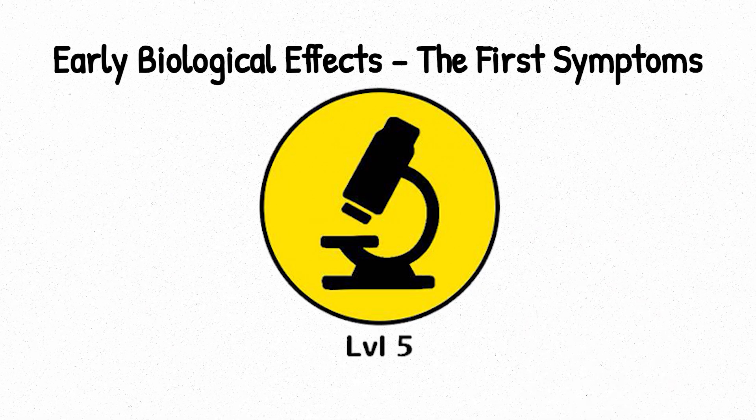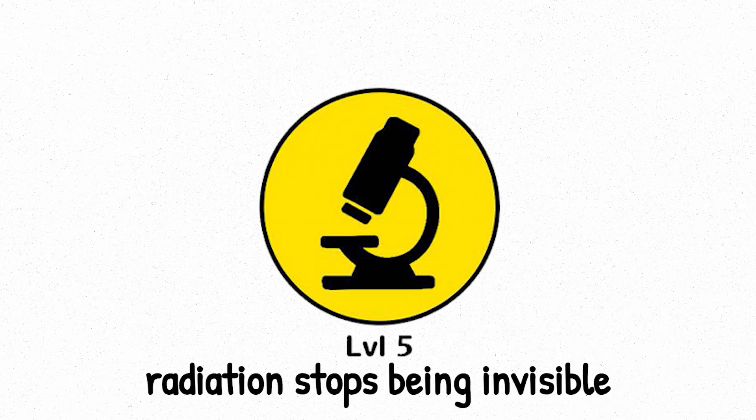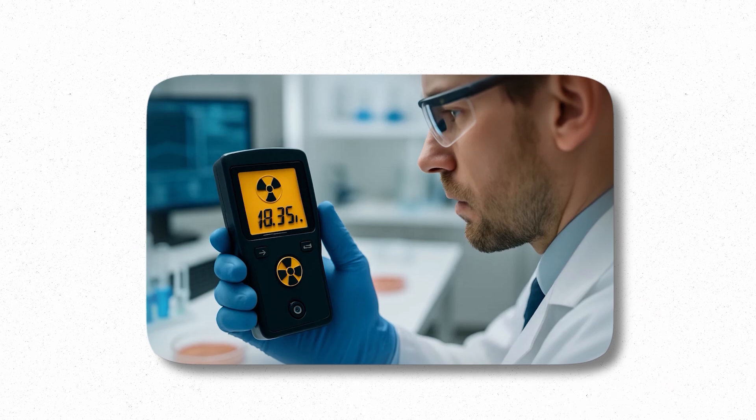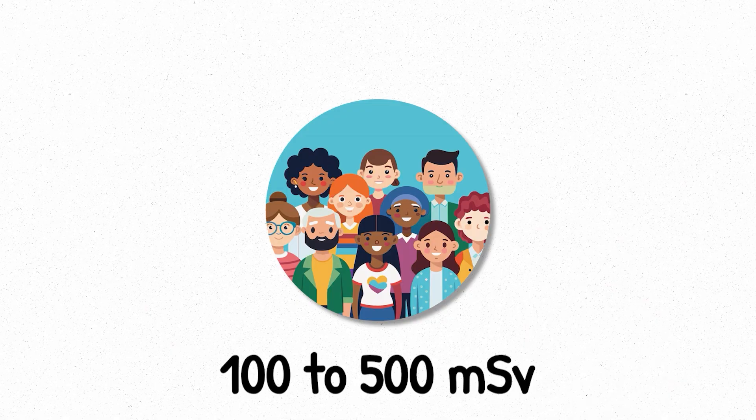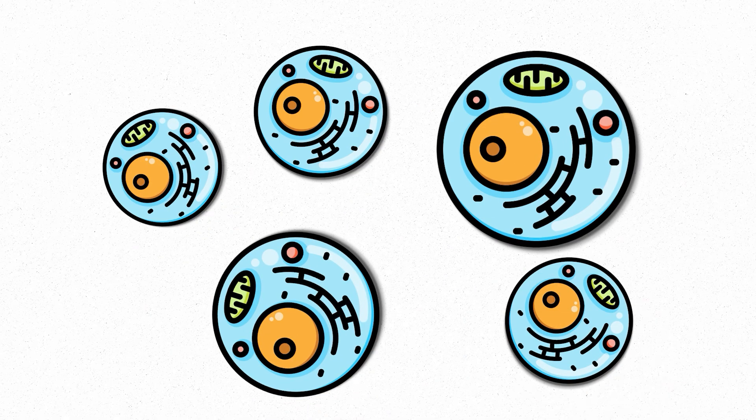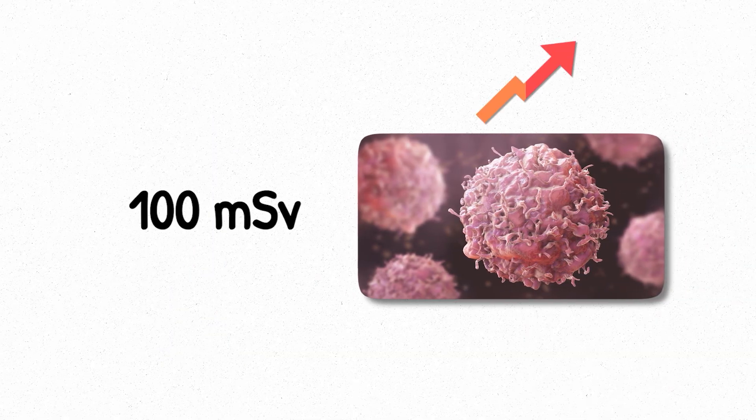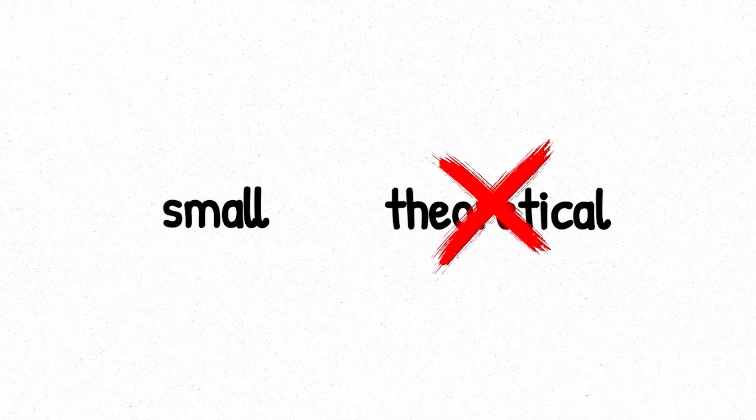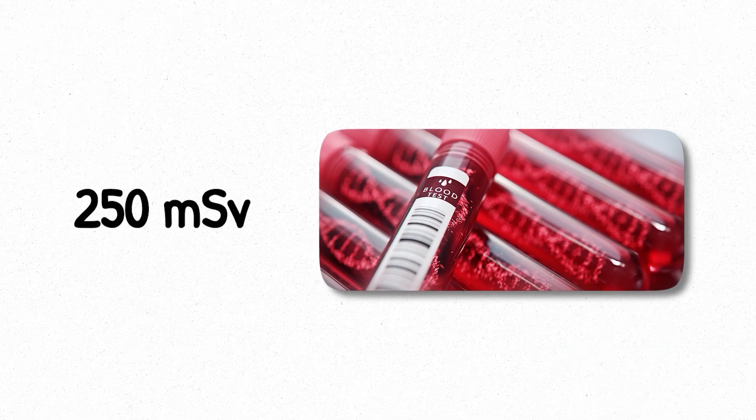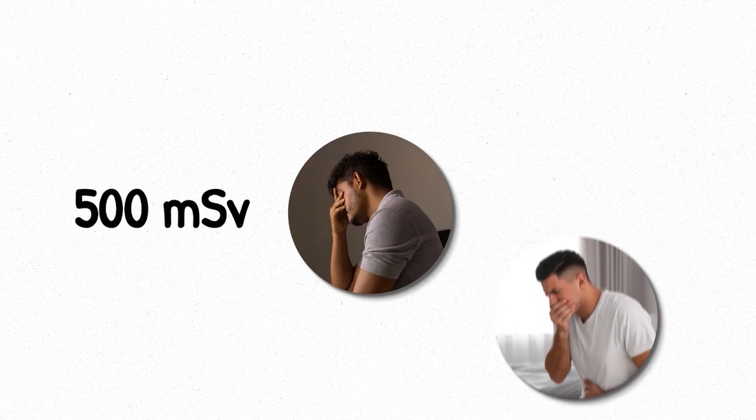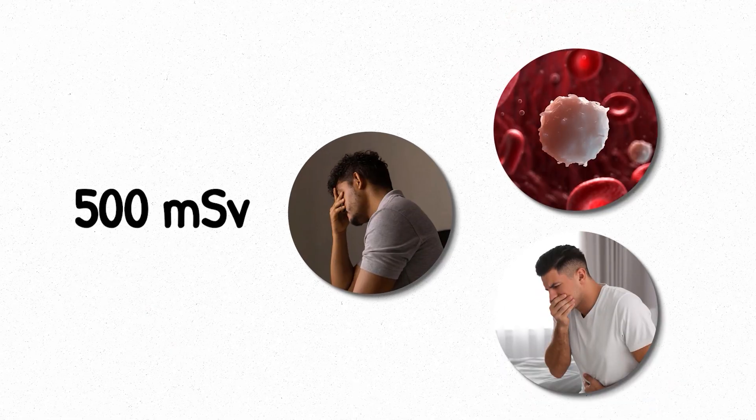Level 5 early biological effects, the first symptoms. At level 5, radiation stops being invisible. The dose is now high enough to cause measurable biological effects, even if exposure is brief. We're in the range of 100 to 500 millisieverts, and for the first time, cells begin to struggle. This is the threshold where the body starts to feel it. At 100 millisieverts, the risk of developing cancer rises. Statistically small, but no longer theoretical. At 250 millisieverts, you may see changes in blood chemistry. And by 500 millisieverts, symptoms like fatigue, nausea, and decreased white blood cell counts can begin to appear.